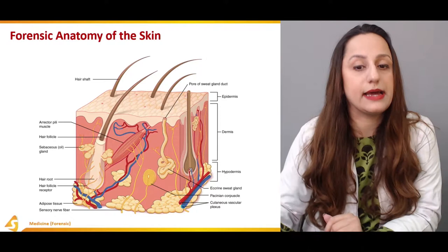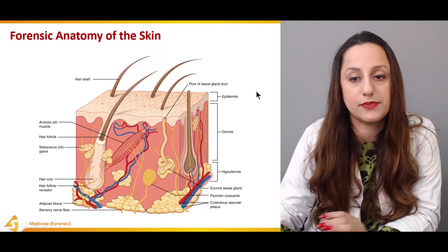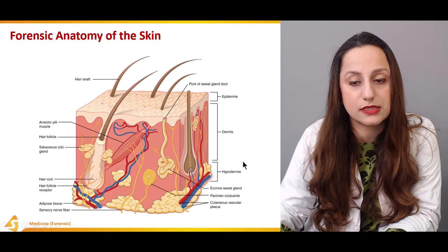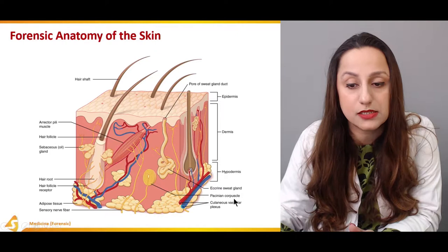Talking about the forensic anatomy of the skin. Here we can see we have the hair shafts on the top layers. The basic categorizations and layers of the skin are: first, the epidermis, then the dermis, then the hypodermis. After the hypodermis, we have the eccrine sweat glands, the Pacinian corpuscles, and the cutaneous vascular plexus.